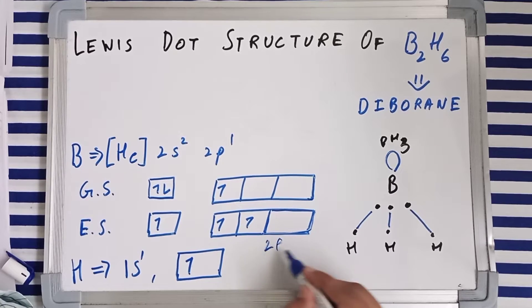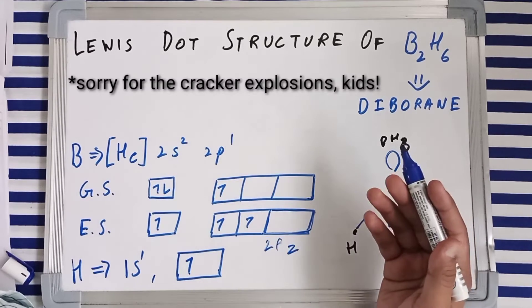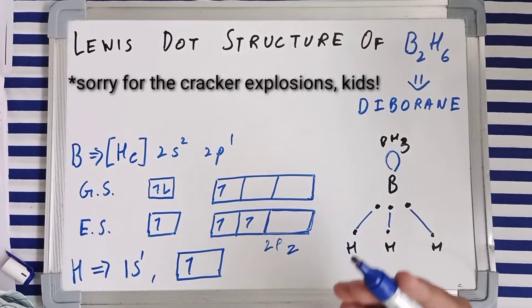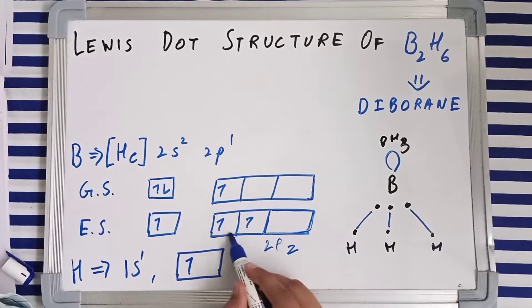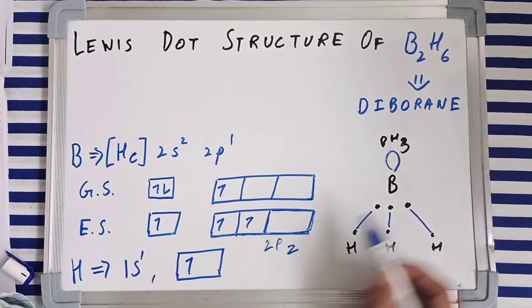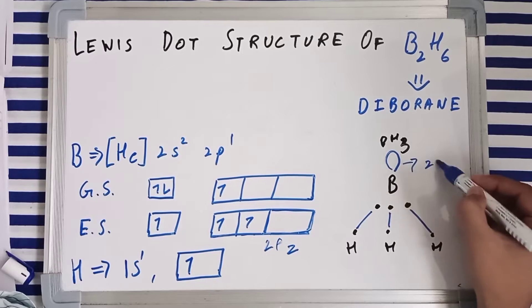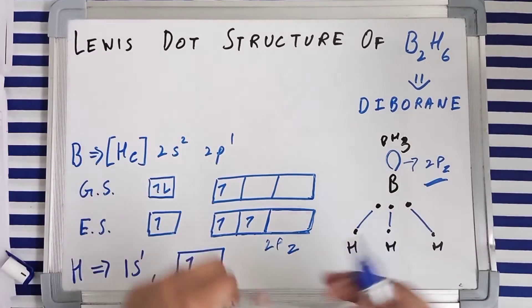So boron will also be having a vacant 2p orbital. You can call it as 2pz, because according to the norms, we call this the 2px, 2py, and 2pz. So you can call this one as 2pz vacant orbital.